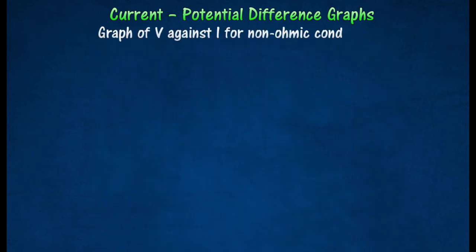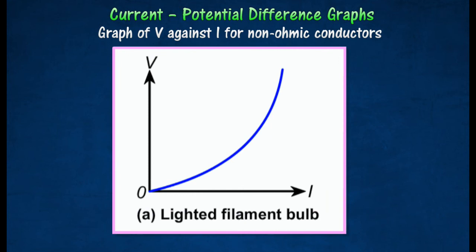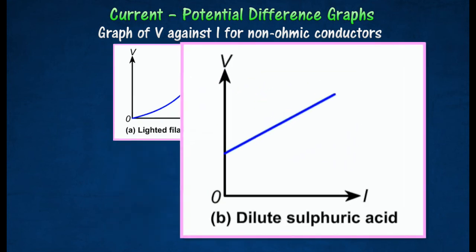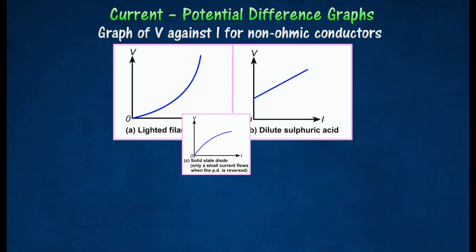Conductors that do not obey Ohm's Law are called non-Ohmic Conductors. Given here is a graph of V against I for some non-Ohmic Conductors.